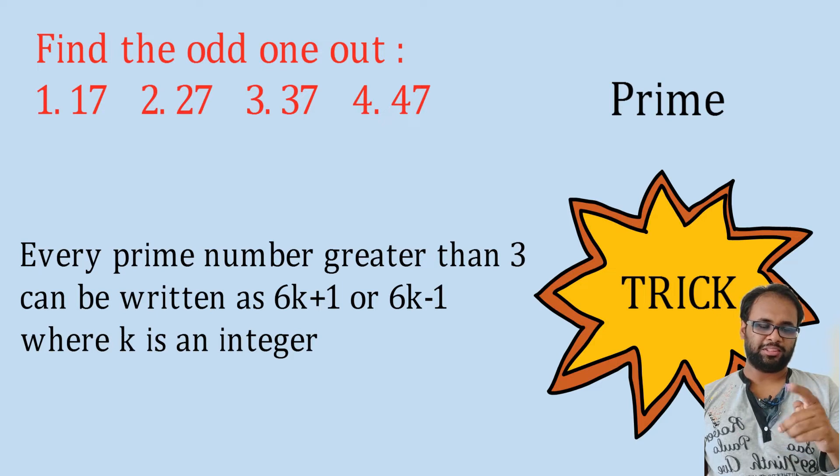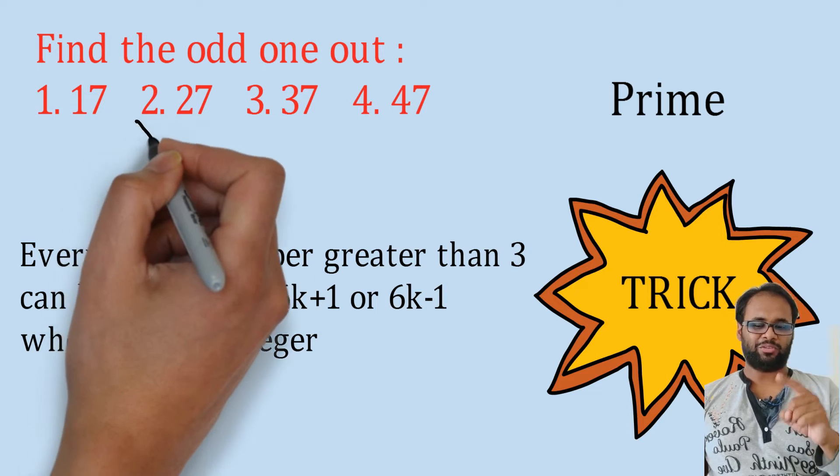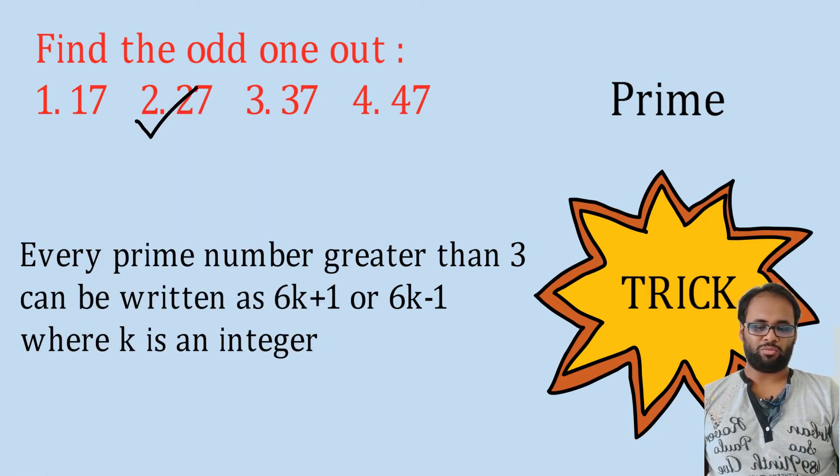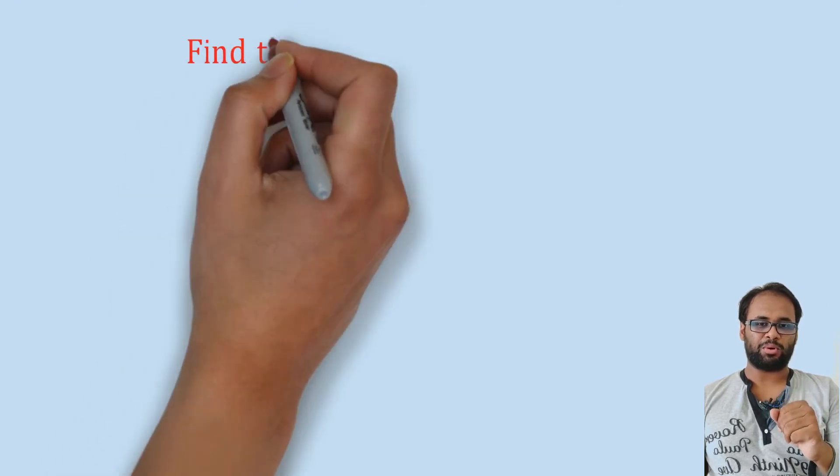If you look at 17, it is 6k minus 1: 6 into 3 minus 1. For 37, it is 6k plus 1: 6 into 6 plus 1. For 47, it is 6k minus 1. Every prime number fits 6k plus 1 or 6k minus 1, while 27 doesn't fit in either form, so it is not prime. Here's the trick for you: 27 is the odd one out. I hope you like the trick - please memorize it or write it down somewhere.